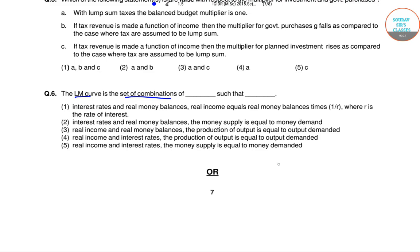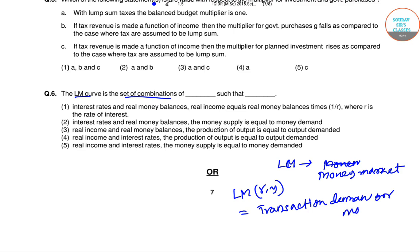Which options are correct? The LM curve actually deals with the money market in the IS-LM framework. The LM equation is a function of rate of interest and income and it has two parts: one is the transaction demand for money and the other part is the speculative demand for money.